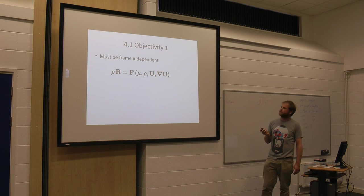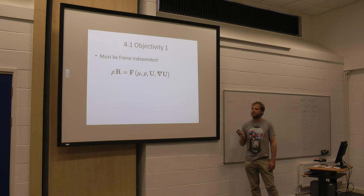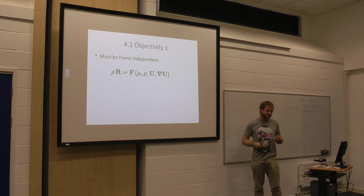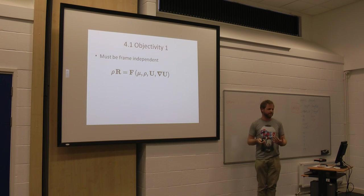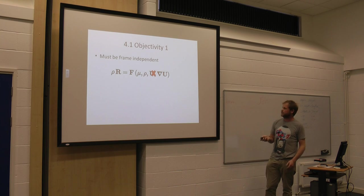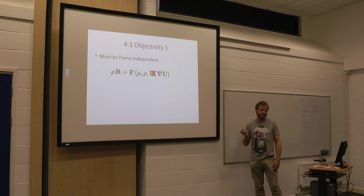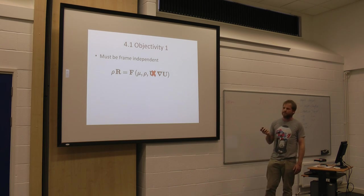Objectivity. Objectivity is the idea that it has to be frame-independent. So if you're running past the wind tunnel, it's going to be the same turbulence level as if you were standing still. So in that sense, you actually can't use the velocity, but you can use the gradient.